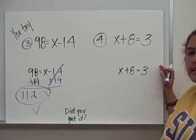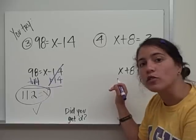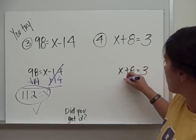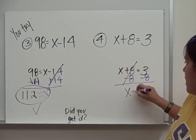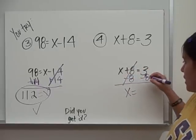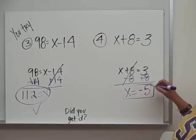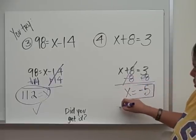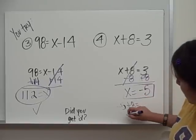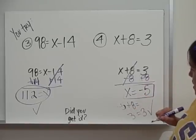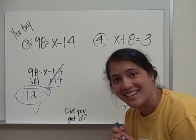Example 4: x plus 8 equals 3. This is an addition equation, so in order to undo addition we use subtraction. I subtract 8 from both sides. 3 minus 8 — I need to touch twice — 3 plus negative 8 is negative 5. That is my solution. Let's double check: substitute negative 5 plus 8. Negative 5 plus 8 is 3, and 3 equals what we want. So x equals negative 5.